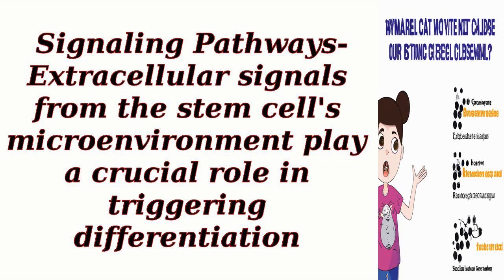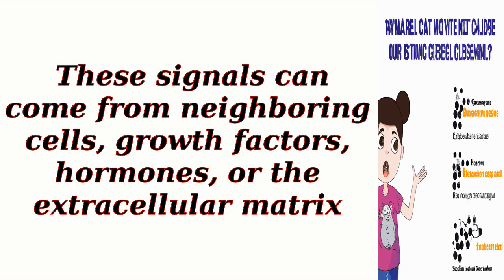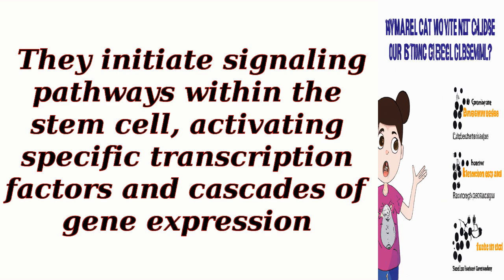Signaling pathways: Extracellular signals from the stem cell's microenvironment play a crucial role in triggering differentiation. These signals can come from neighboring cells, growth factors, hormones, or the extracellular matrix. They initiate signaling pathways within the stem cell, activating specific transcription factors and cascades of gene expression.